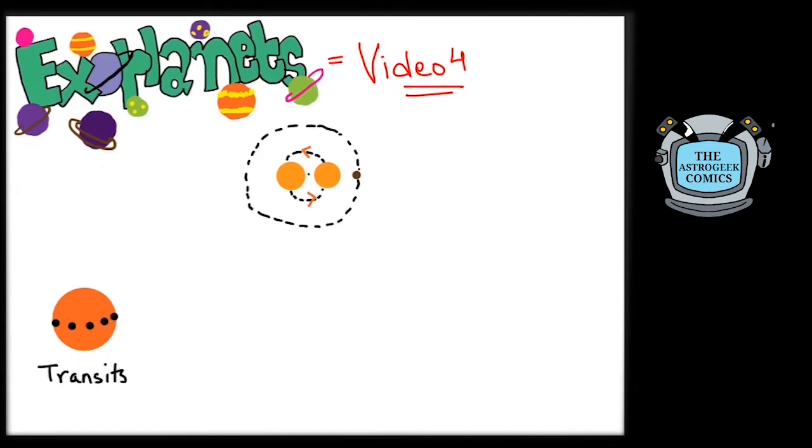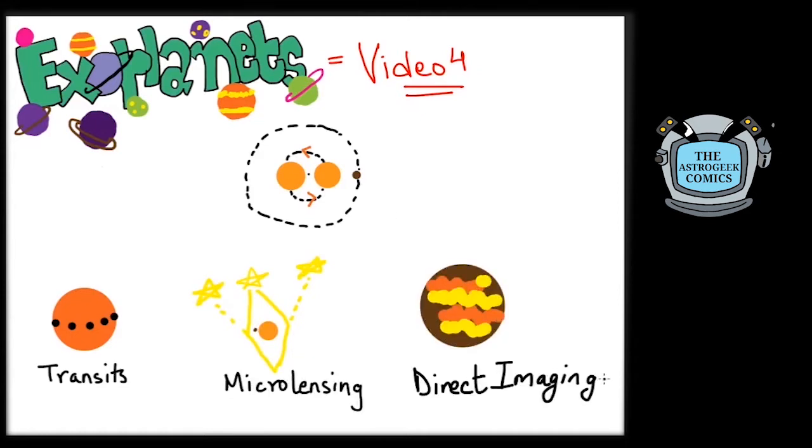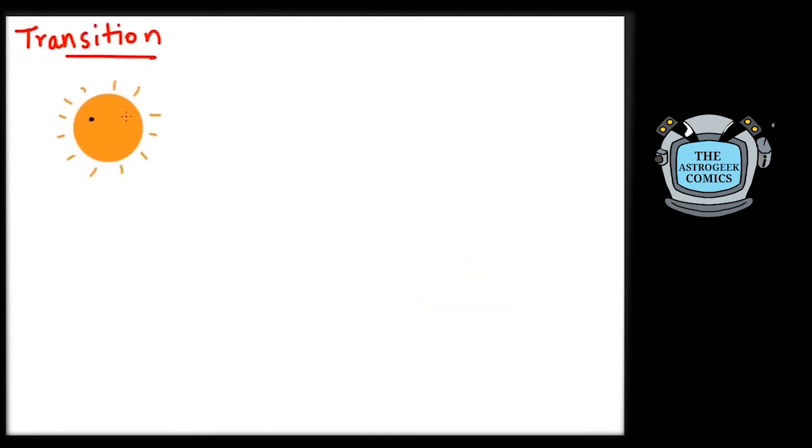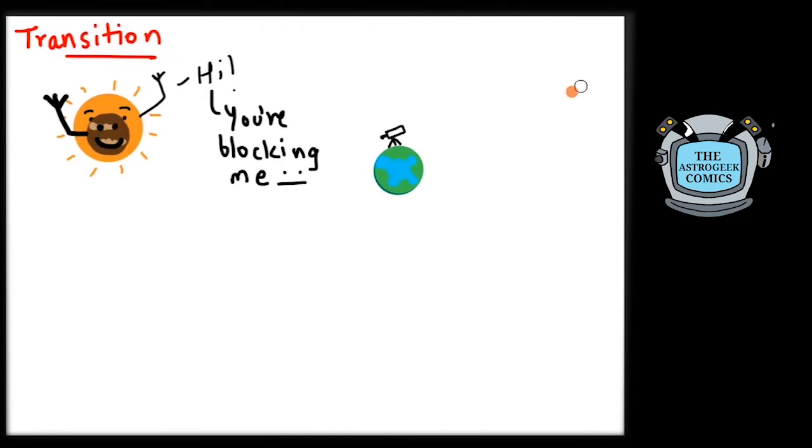These are transit method, microlensing, and direct imaging. Let's begin with the transit method. Transit simply means to pass in front. When a planet's orbit around the star is aligned with our line of sight, it will appear to pass in front of its star. This is called a transit.